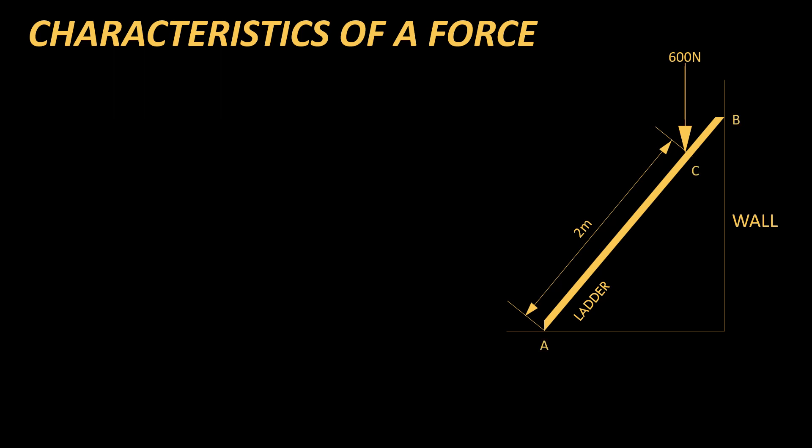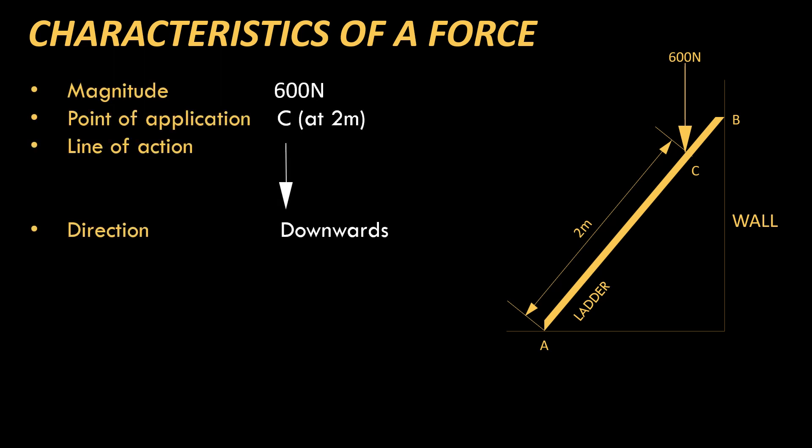So, these are the various other components. That is, A, B and C are the various points that have marked for understanding or addressing purposes. And guys, these are the characteristics. That is, the magnitude of the force need to be mentioned. That is 600 N. And also, the point of application. I just can't say 600 N and end it. We need to know where is the force applied. So, that is at point C. That is 2 meters alongside the ladder.